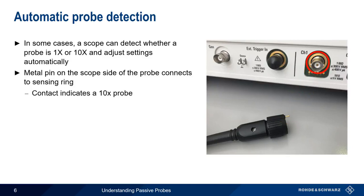If our probe and or scope don't support this kind of automatic sensing mechanism, then we have to manually configure the scope when using a 10x or higher attenuation probe.